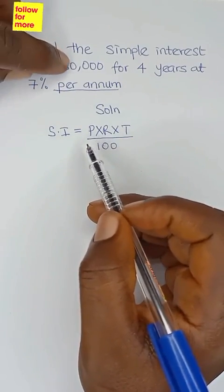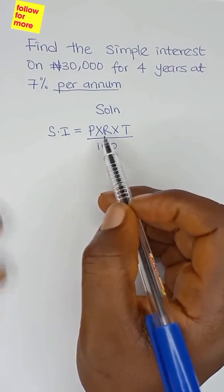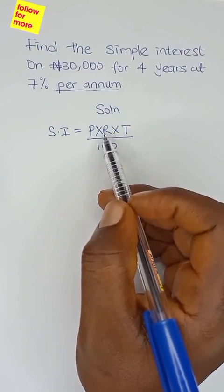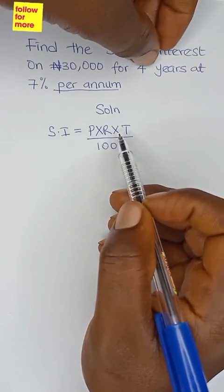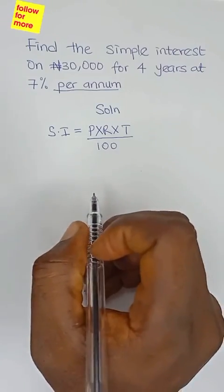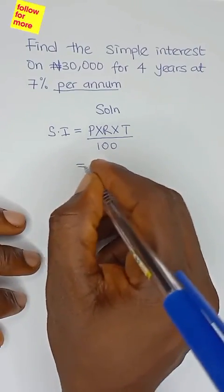R is the rate, which is 7%, and T is the duration, which is four years. We are going to put each value where they belong.